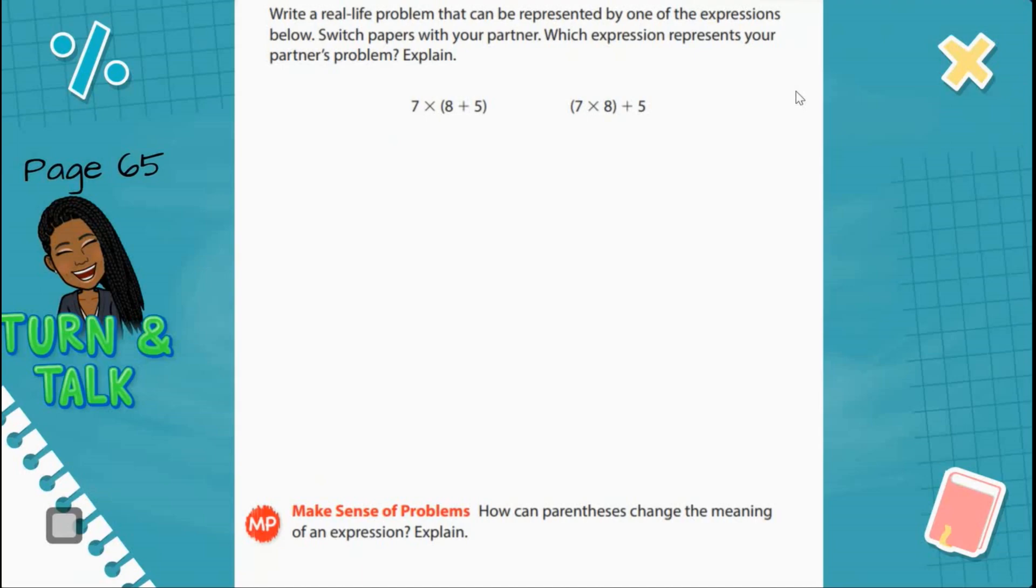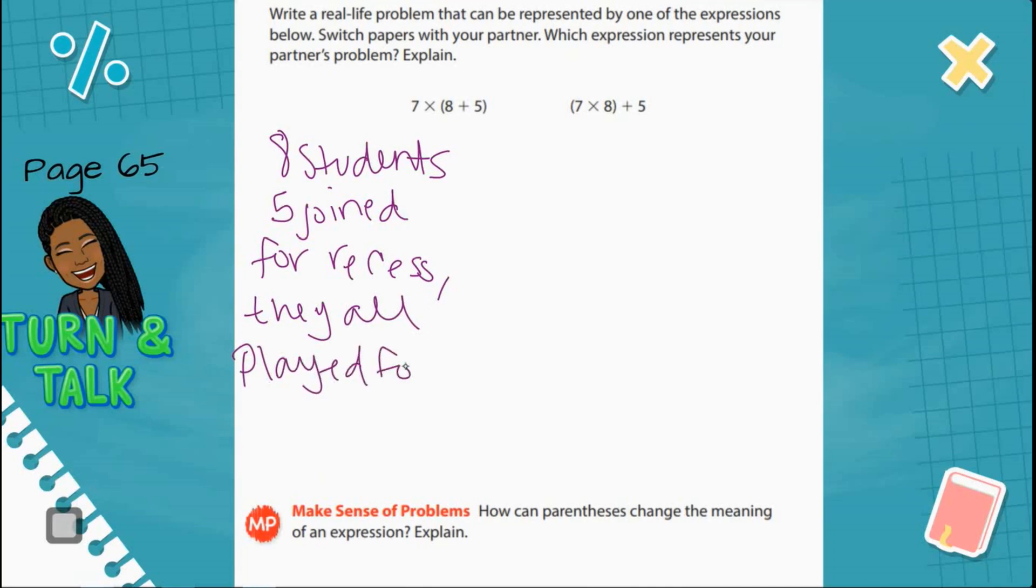Let's come back. Let's look at the first expression. The first expression is 7 times 8 plus 5. So I could say that I have 8 students, 5 joined me for recess. I have 8 students, 8 students joined me. So joined would be a key word I would know that I needed to add. And then they all played for 7 minutes. So I know that I would have to multiply that.